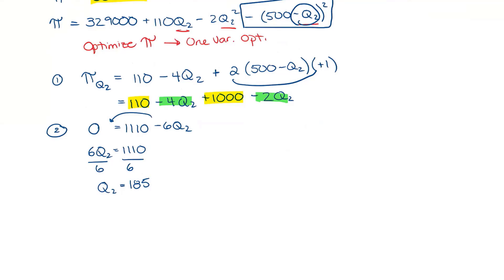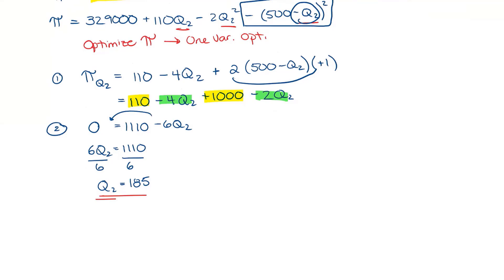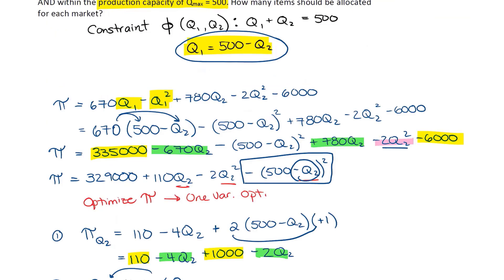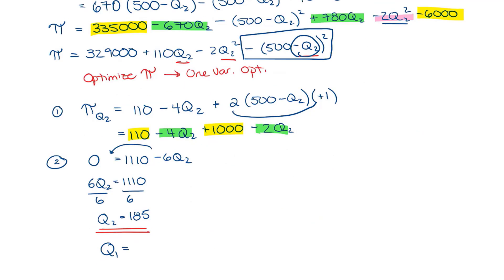So now I have a Q2 value. I can solve for the Q1 value as well. Remember that I have this relationship. Q1 equals 500 minus Q2. So it's going to be 500 minus 185. Q1 is going to be 315.